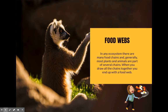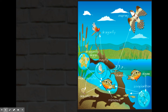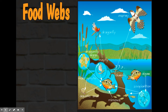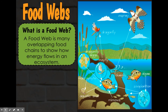Because different organisms eat different things, you have multiple opportunities for different food chains to be created, and for those food chains to overlap. Many organisms could be eating from the same banana tree. In your ecosystems notebook, you're going to be taking notes on food webs today. A food web is many overlapping food chains that show how energy flows in an ecosystem.